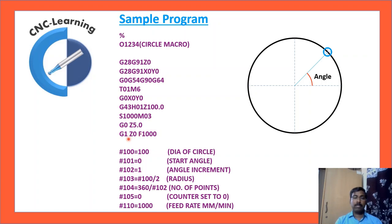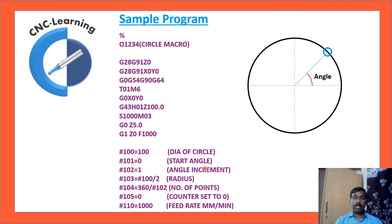S1000 M03 defines RPM with clockwise rotation. G0 Z5 is rapid movement to Z5. Then G1 Z0 F1000 — the tool is positioned to where it is to cut. Now we define the variables: since we are cutting one circle, the diameter is important, the start angle is important, and how many points to define in terms of angle increments. Radius is automatically calculated as diameter divided by 2. Angle increment: a circle is 360 degrees, so 360 divided by #102 (angle increment). If angle increment is 1 degree, the number of points would be 360.